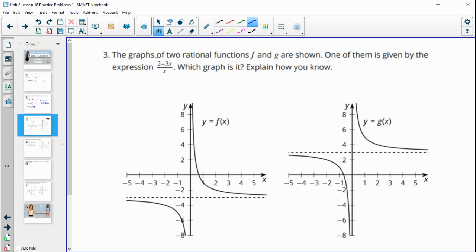Number three, the graphs of two rational functions, f and g, are shown. One of them is given by the expression (2 - 3x)/x. Which graph is it? So if we kind of take a look at this and we just divide each of these. So if I do 2 over x minus 3x over x, this would simplify to 2/x minus 3.